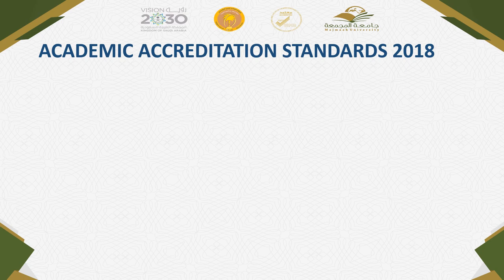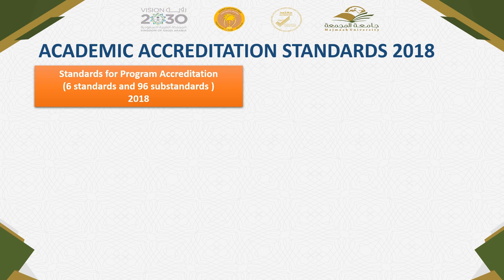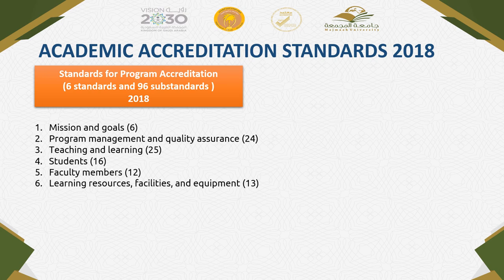The NCAAA academic accreditation standards 2018 had six standards and 96 substandards or criteria. The first standard was mission and goals with six criteria. The second standard was program management and quality assurance with 24 criteria. Teaching and learning had 25 criteria. Standard four was about students with 16 criteria. The fifth standard was about faculty members with 12 criteria. The sixth standard was learning resources, facilities, and equipment with 13 criteria.